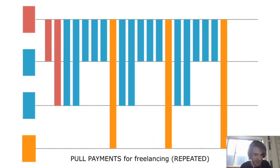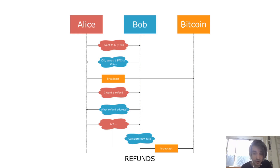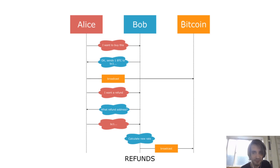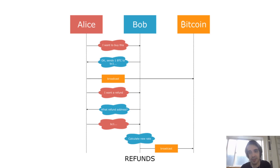Another example where pull payments are very useful is for the concept of refunds — and we are actually using this in BTCPay Server. How does a refund work? Alice says she wants a refund. What very often happens is Bob asks for her refund address, Alice replies with a Bitcoin address, then Bob calculates the right amount to reimburse and broadcasts the transaction. Every time there's a refund it's the same long process, taking lots of mental energy for Bob.